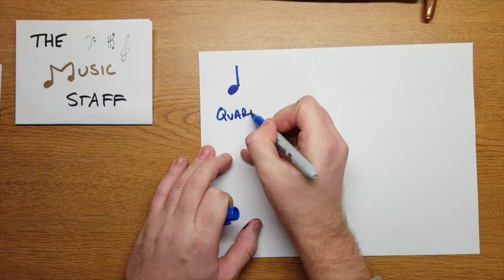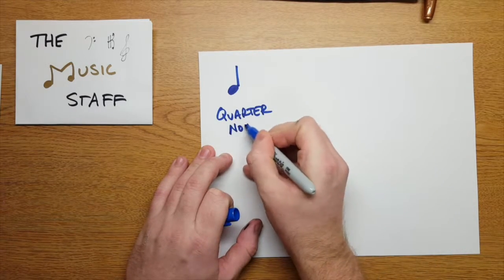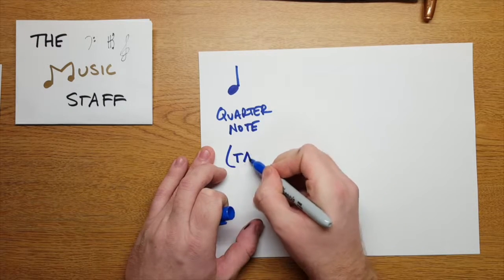So first we have the quarter note. It's a stem, black head. It gets one beat, ta.